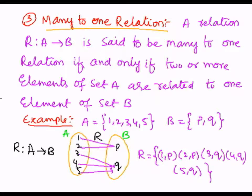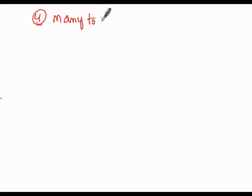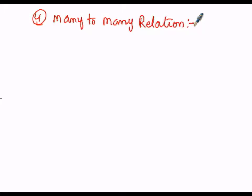Now let us go to the fourth and last type, which is the many-to-many relation. Under this relation, when we consider a relation R from A into B, it is called many-to-many if and only if two or more than two elements of set A are related with two or more than two elements of set B.